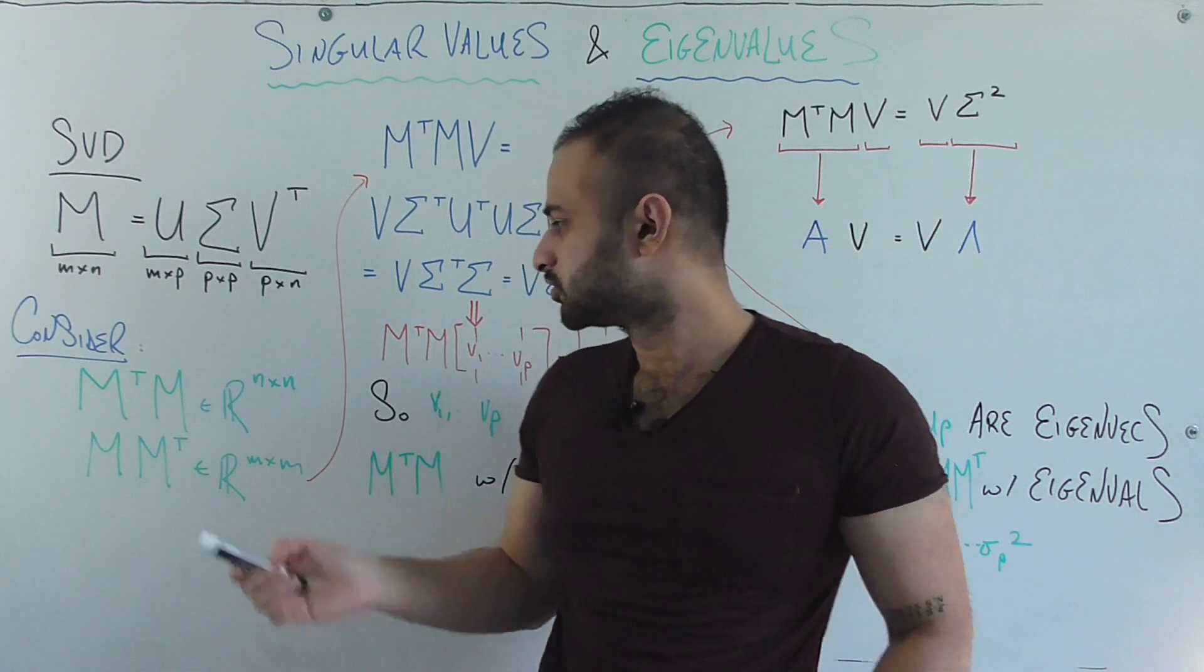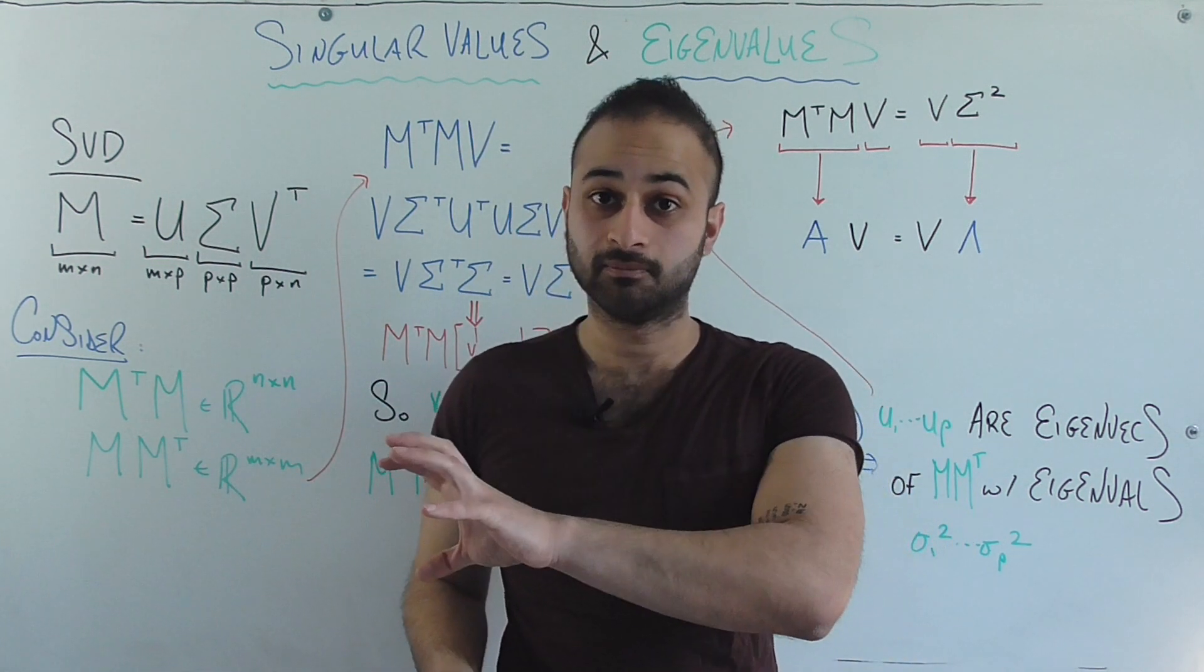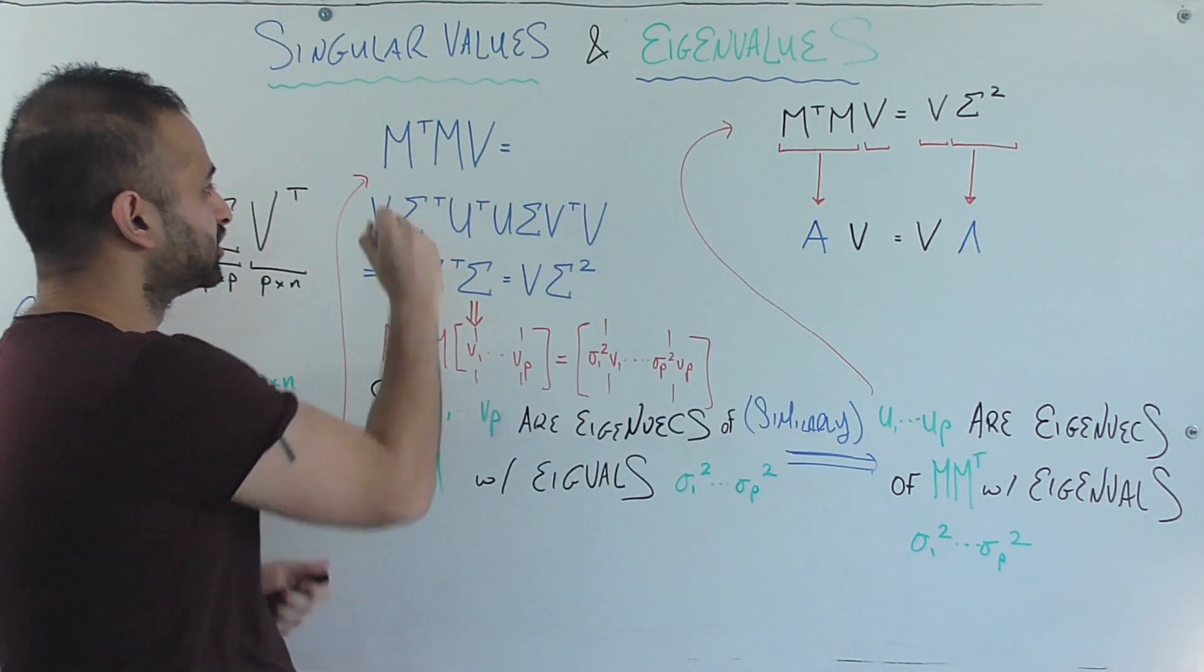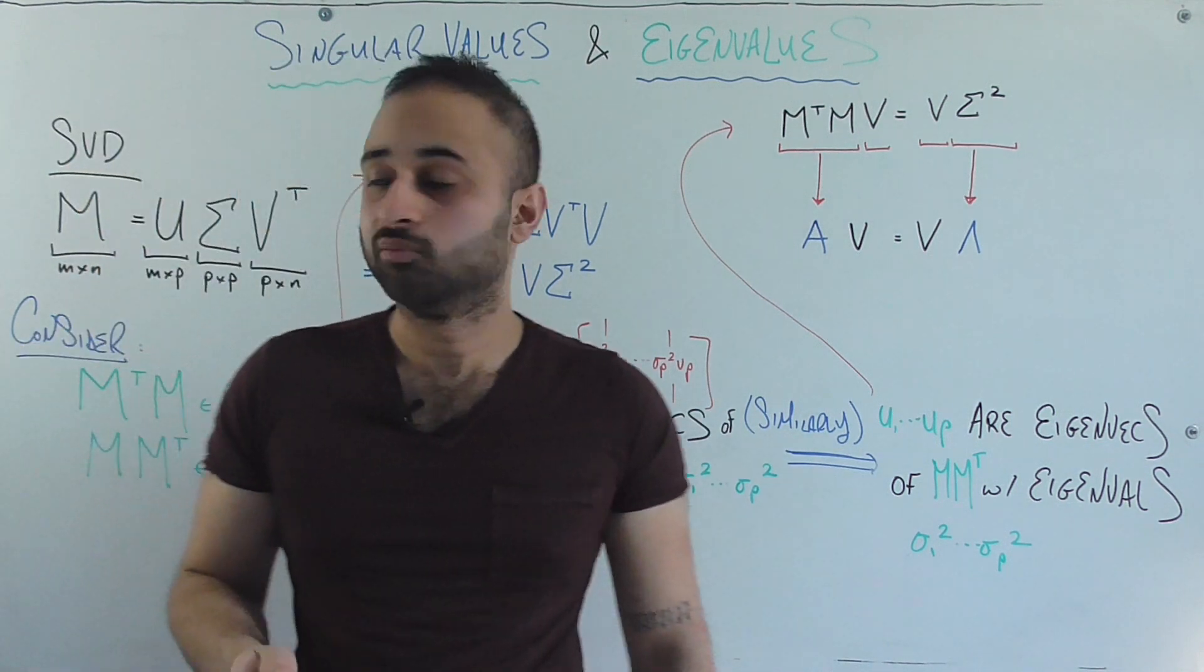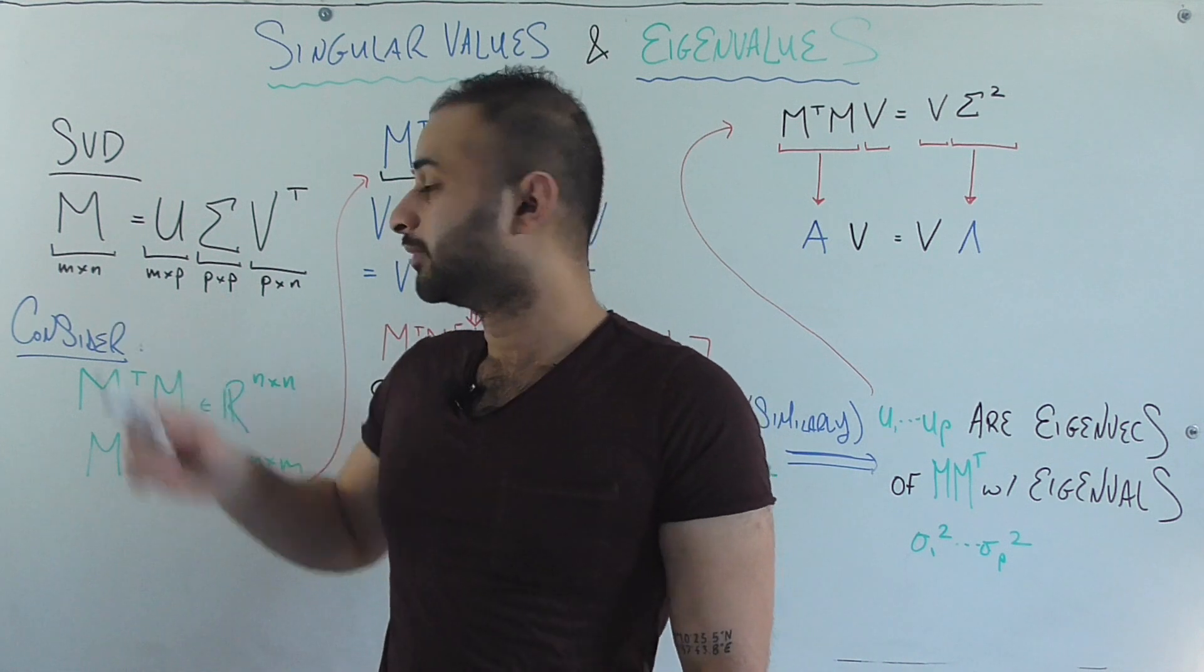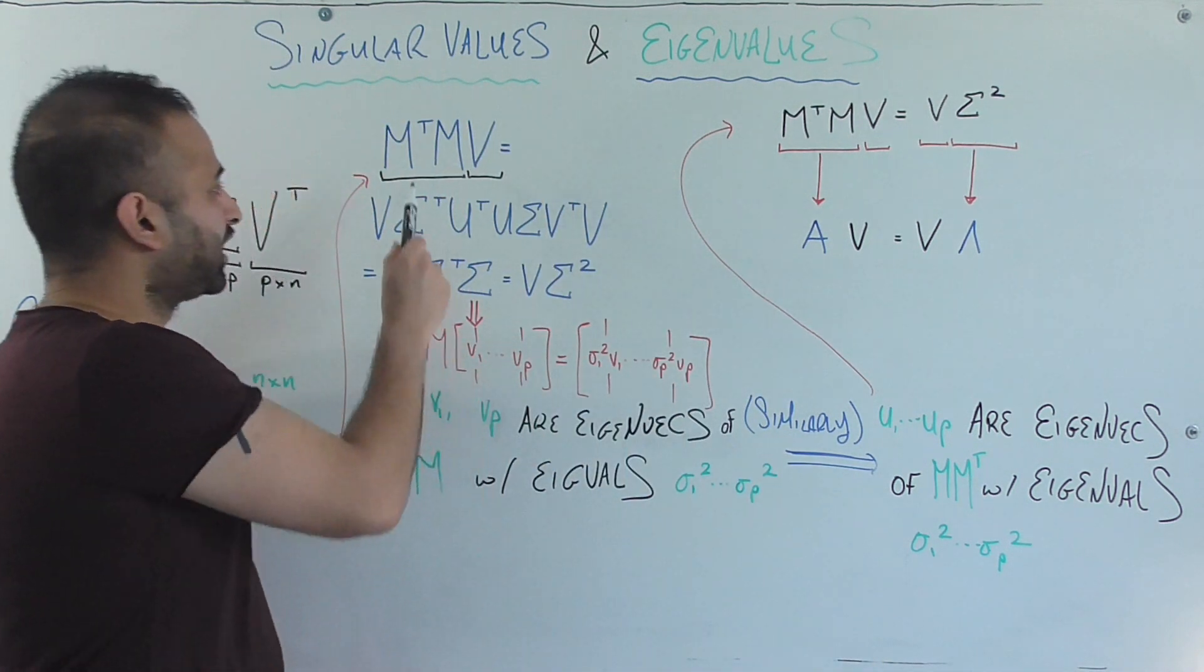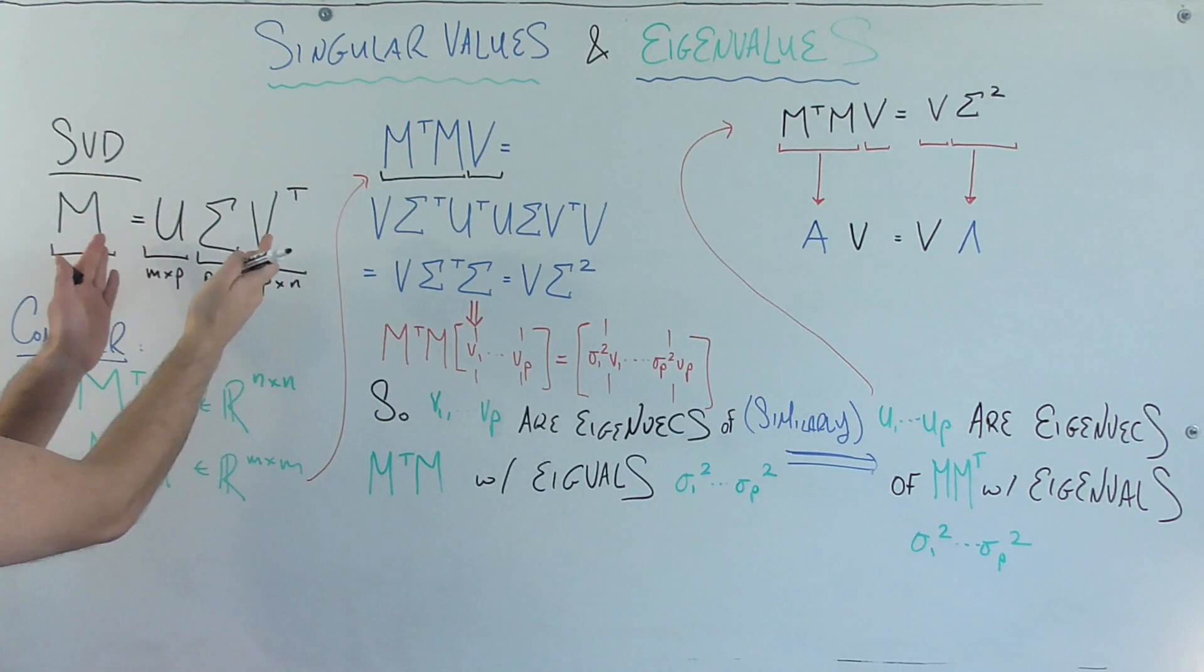Let's think about what would happen if I took M transpose M, that matrix, and multiplied it by V. That's what I have exactly done here. So M transpose M, which is the matrix we were talking about earlier, multiplied by V. V again being the matrix here containing the right singular vectors of our original matrix M. So let's just go through this calculation. We can actually open up this M transpose and M since we know its literal form right here.